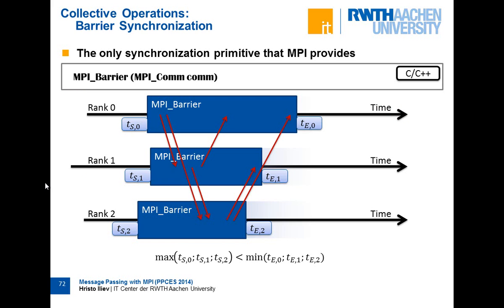The first and simplest collective operation is the barrier synchronization: MPI_Barrier. You provide the communicator and processes block until all other processes in the same communicator have called MPI_Barrier. MPI guarantees that the maximum entry time TS1 is less than the minimum exit time TE1, meaning there is a point in time where all processes are inside MPI_Barrier. So you know each process has reached the line where the MPI_Barrier call is, synchronizing your programs.